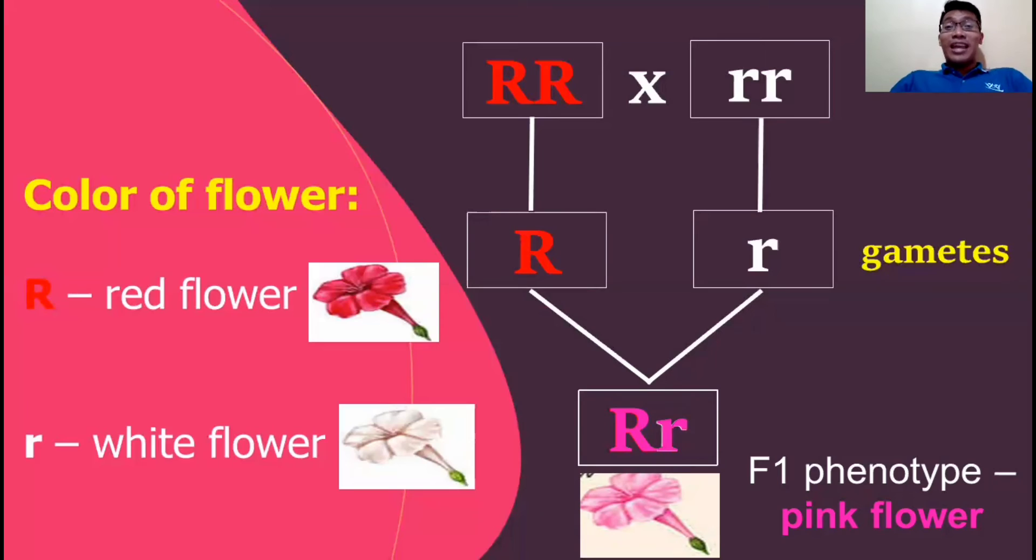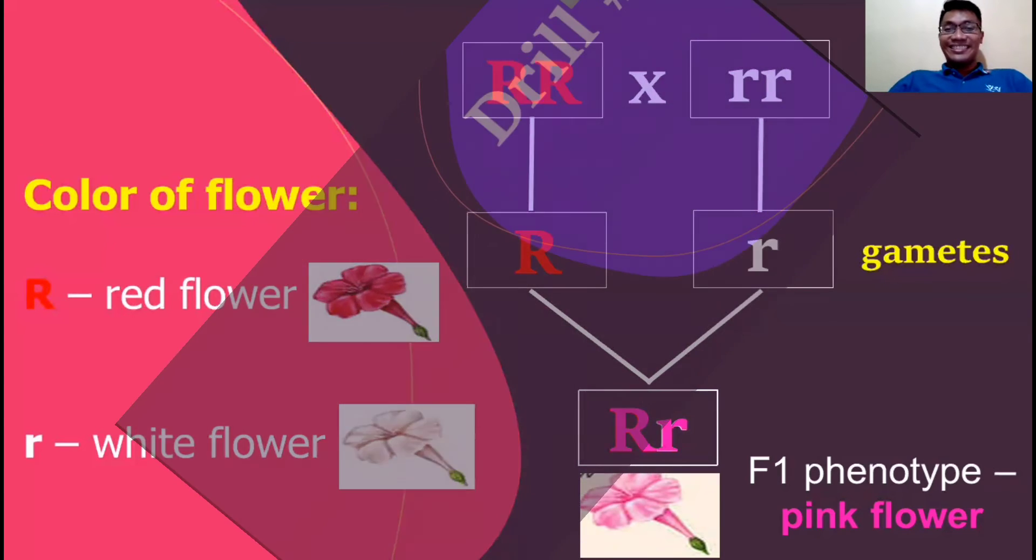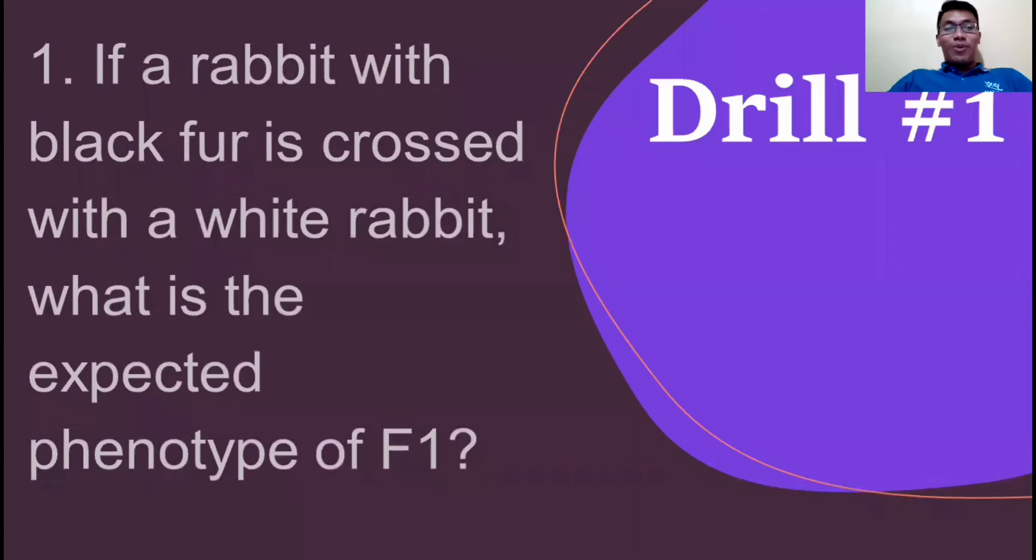Because based on analysis, they will always have 100% probability of producing this. Let's answer drill number one: if a rabbit with black fur is crossed with a white rabbit, what is the expected phenotype of F1? Let's try to analyze this.